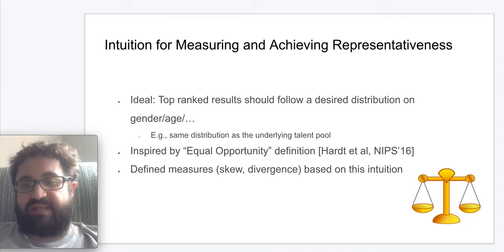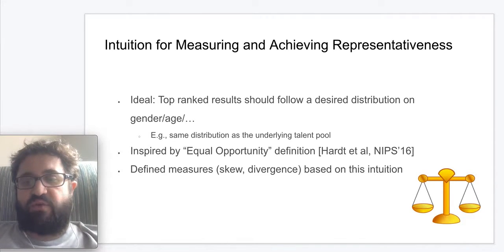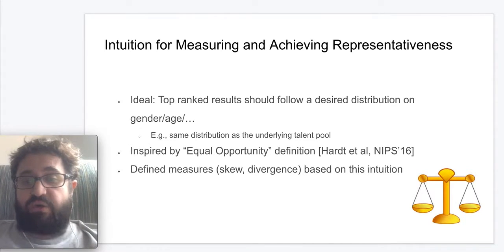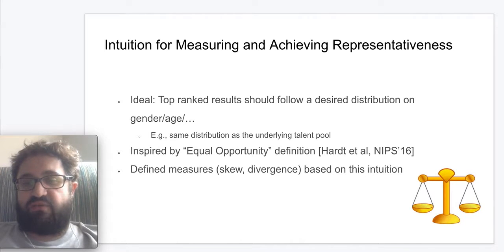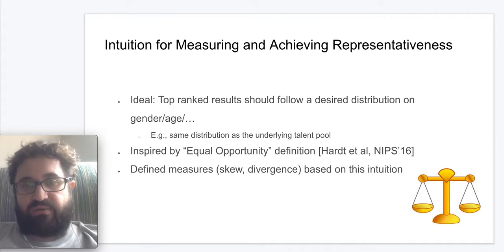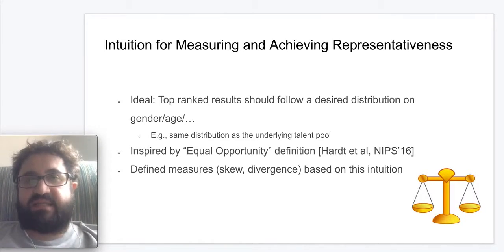In our setting, we assume that the LinkedIn members that match the criteria specified by recruiters in a search request are qualified for that request. We can roughly map to the definition of equal opportunity as follows: the predictor function corresponds to whether a candidate is present in the top-ranked results, and the true outcome corresponds to whether this candidate matches the search request criteria — hence is qualified. Satisfying this definition means that whether or not a member is included in top-ranked results should not depend on the attribute of interest, or equivalently that the proportion of members belonging to a given attribute value should not vary between the qualified candidates and the top-ranked results.